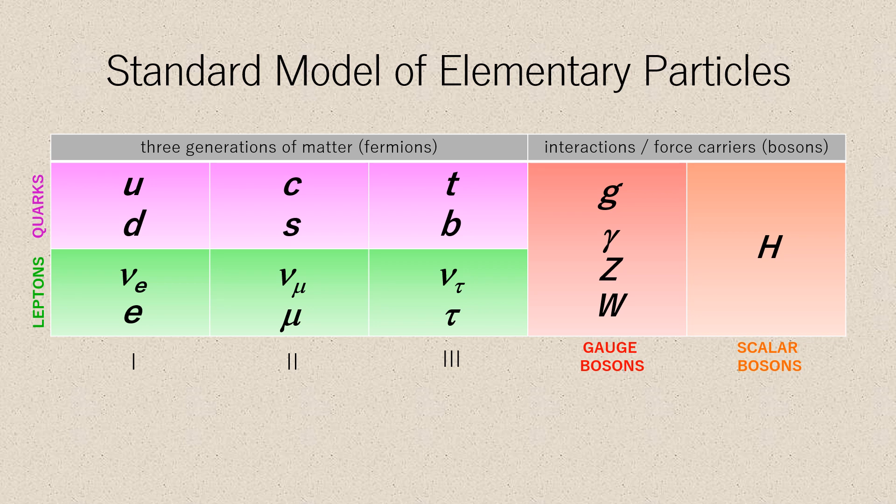The standard model of particle physics is the theory describing three of the four known fundamental forces: the electromagnetic, weak, and strong interactions, not including the gravitational force in the universe, as well as classifying all known elementary particles.